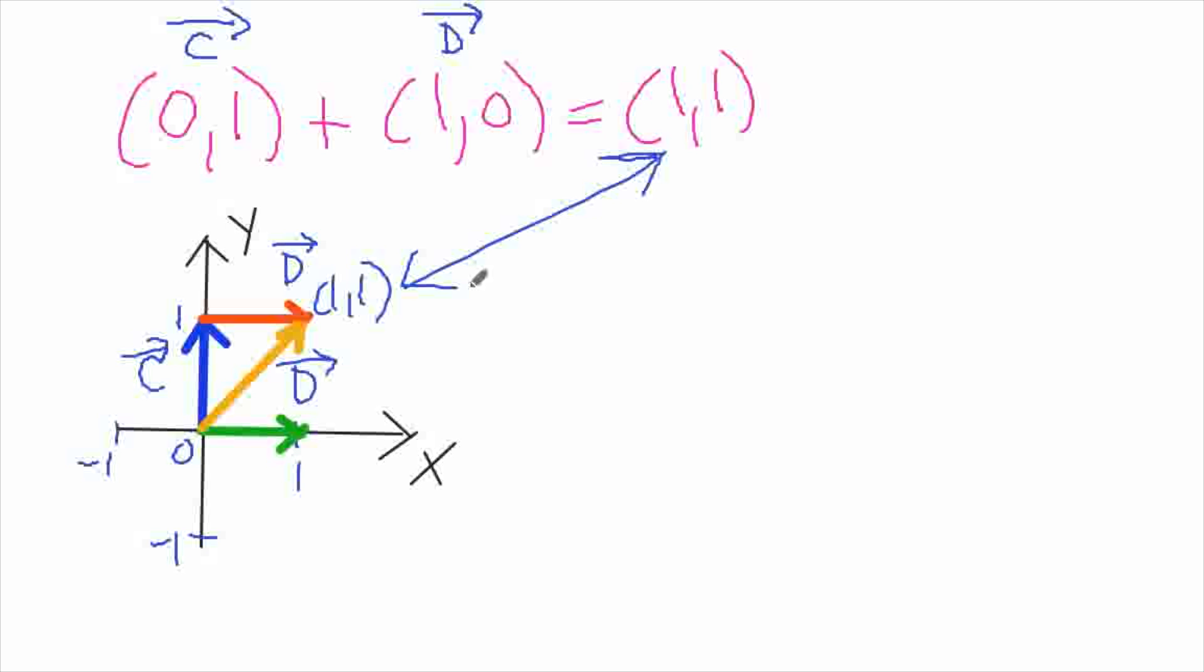how do you do vector subtraction with arrows? Well, here's what I would suggest. So c minus d, you might remember from arithmetic class that subtraction is the same as adding the inverse or the negation. So for the sake of understanding how to do this, think of that this is equal to c plus minus d.